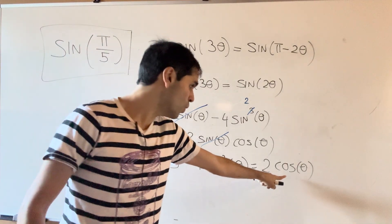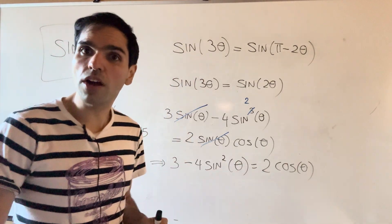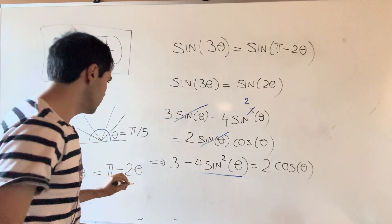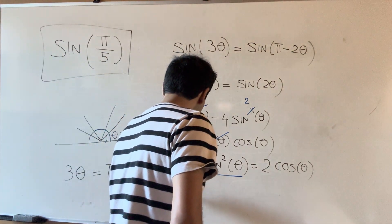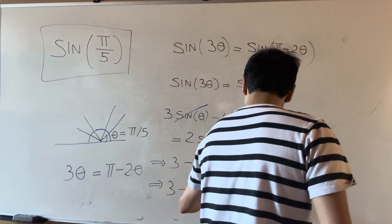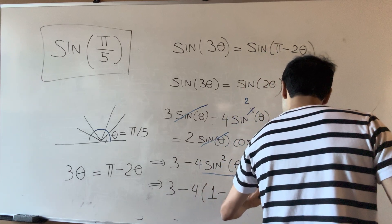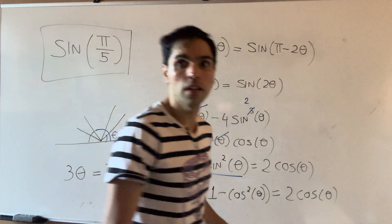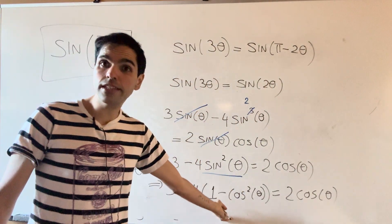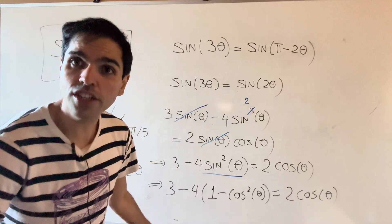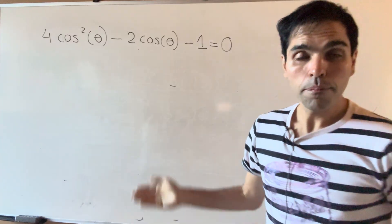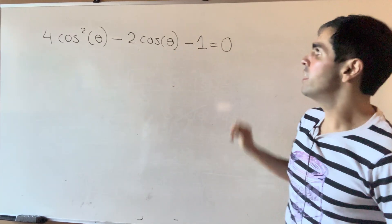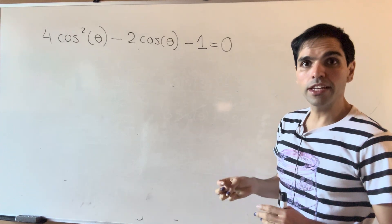We have a cosine here, and we can rewrite everything in terms of cosine by using sine squared equals one minus cosine squared. So we get three minus four times (one minus cosine squared) equals two cosine theta. This eventually simplifies to a quadratic equation in cosine, giving us four cosine squared theta minus two cosine theta minus one equals zero.